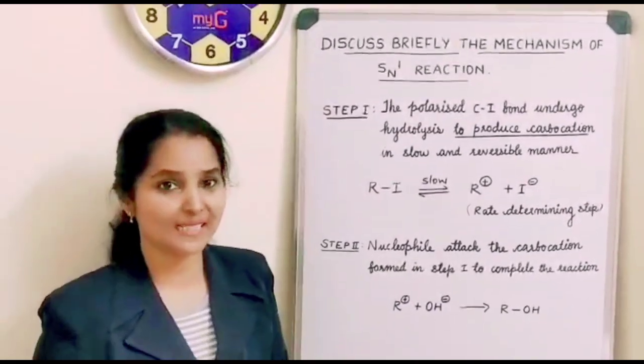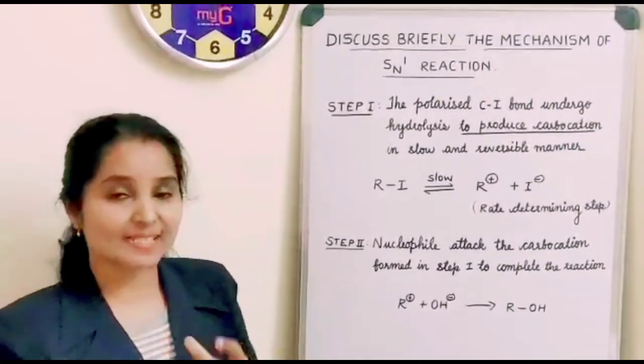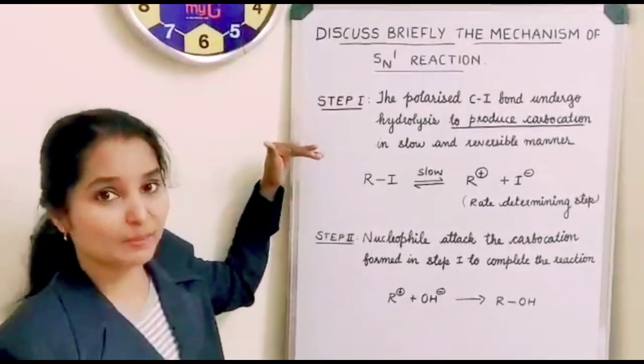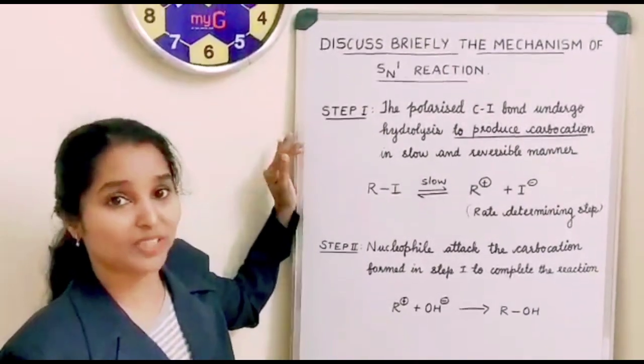Now let's see what is the mechanism of SN1 reaction. This SN1 reaction proceeds via two steps. Step one is the rate determining step and it is supposed to be the slow step.